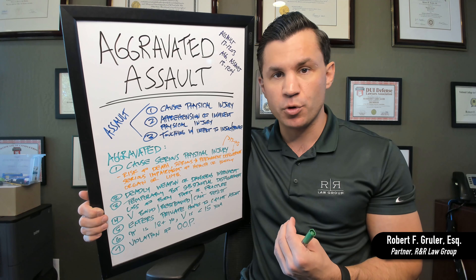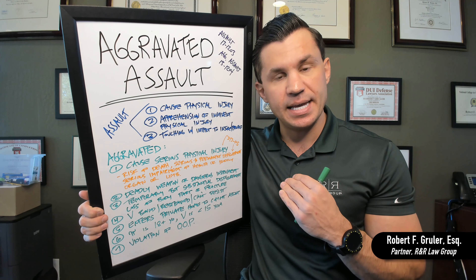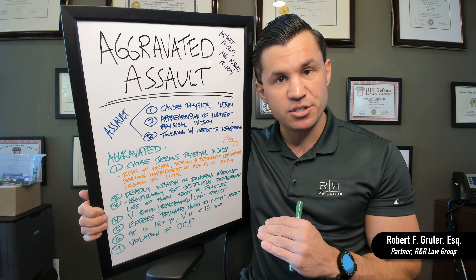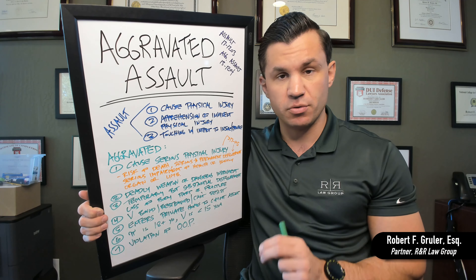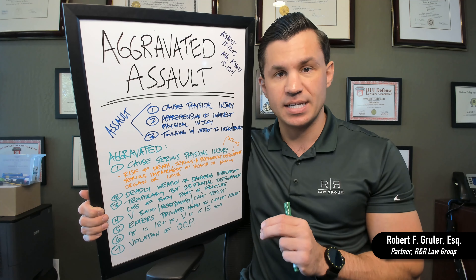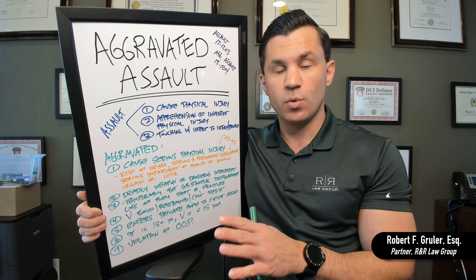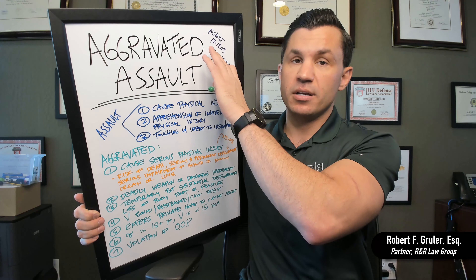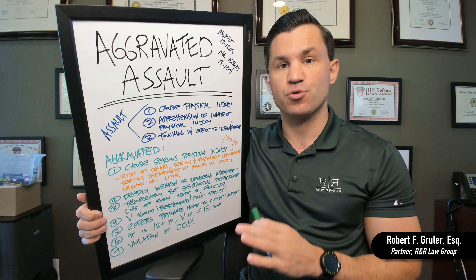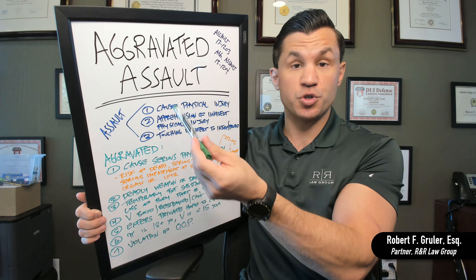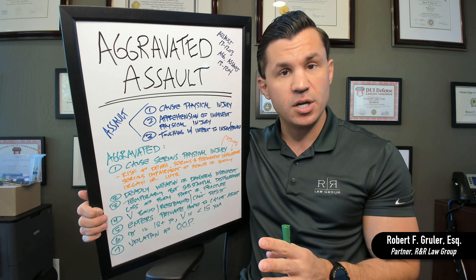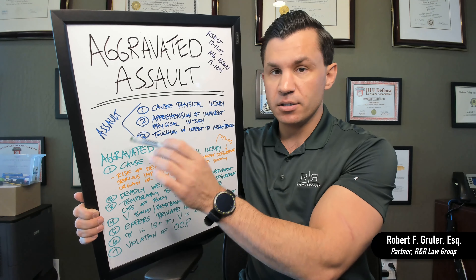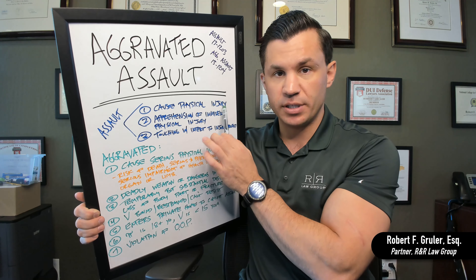Today we're talking about aggravated assault in Arizona. This is a very common charge. The statute itself is very bulky — it has a lot of language — so we're going to break it up into a couple of different videos. Today we're going to be talking specifically about the first part of the statute that details different types of situations and conduct that will take a regular assault charge and aggravate it. There are seven different ways we'll cover today.